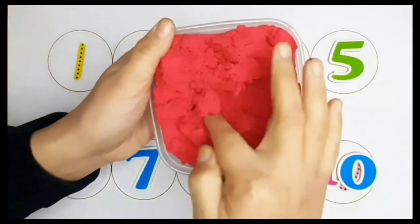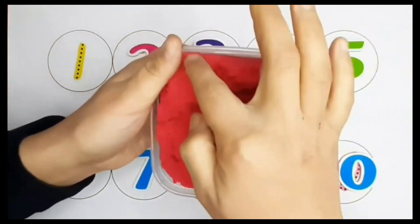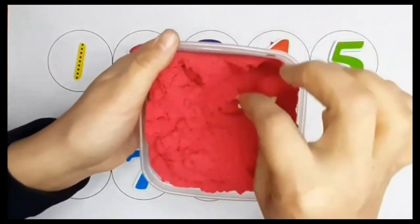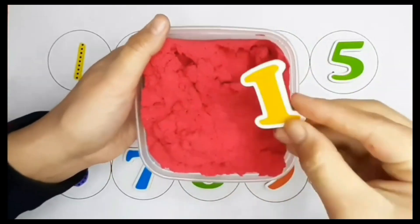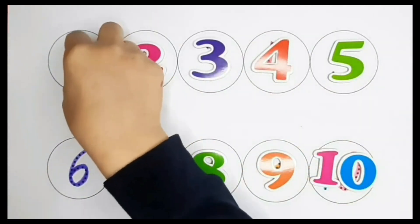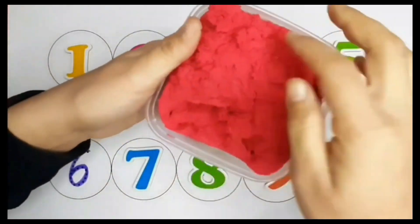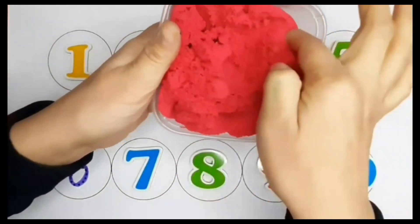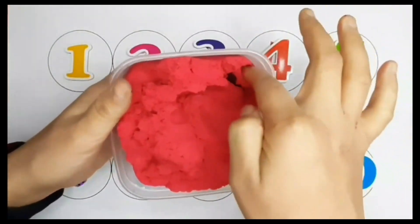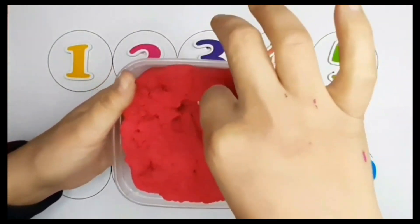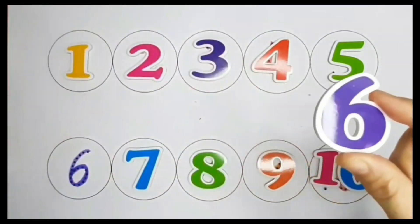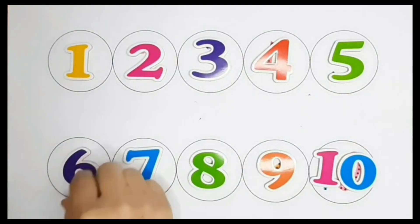Let's see which number is next. Number 1. That's right. There is only one number left. Do you know what it is? It's number 6. Yes, that's right. There it is.